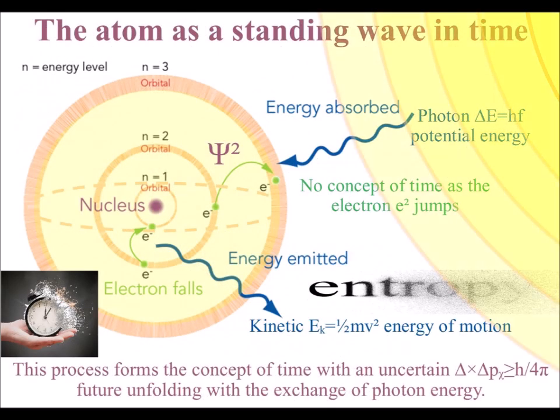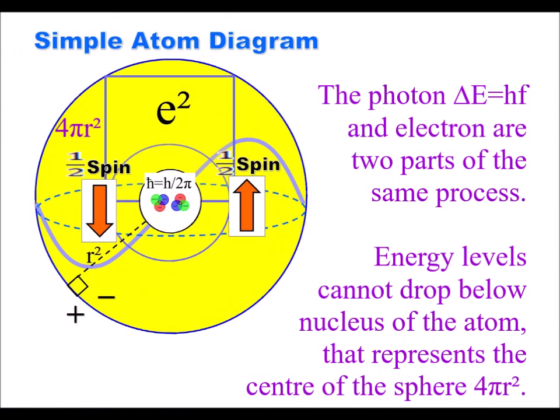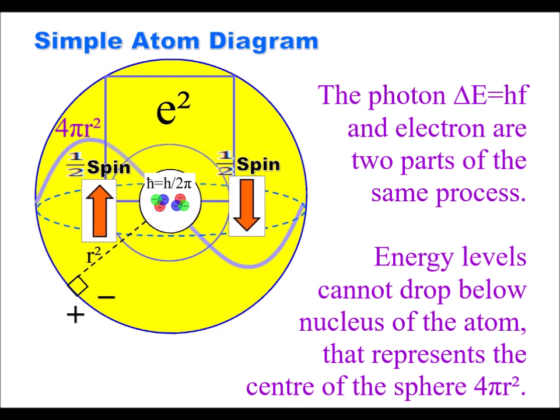Within this process, the Planck constant represents a minimum quantity in space and time. This is formed by the center of the sphere being a constant with the radius squared being a constant relative to the spherical surface.